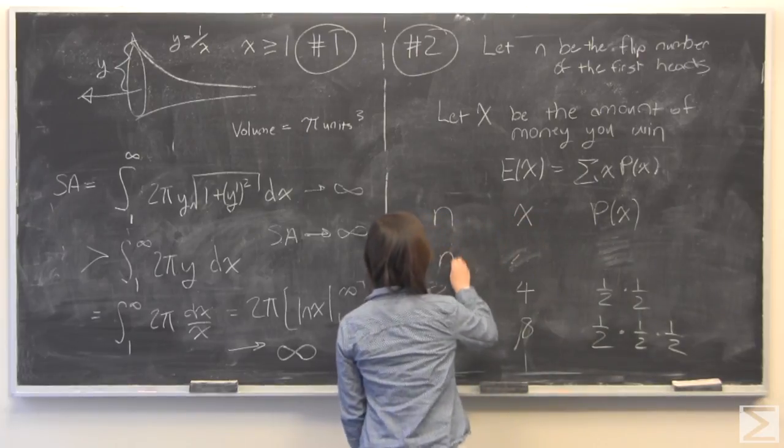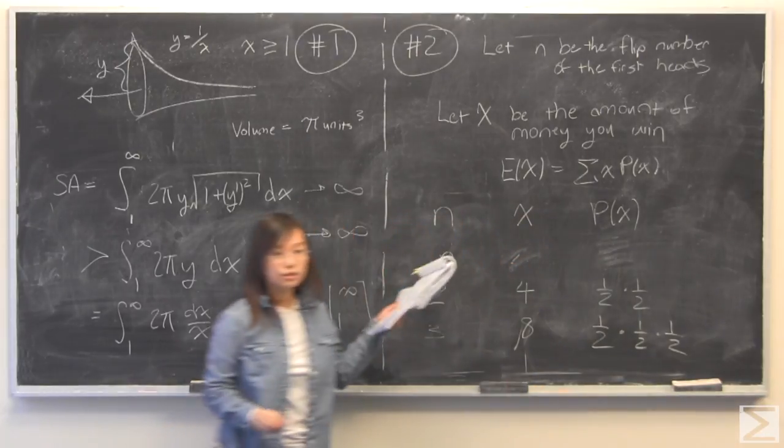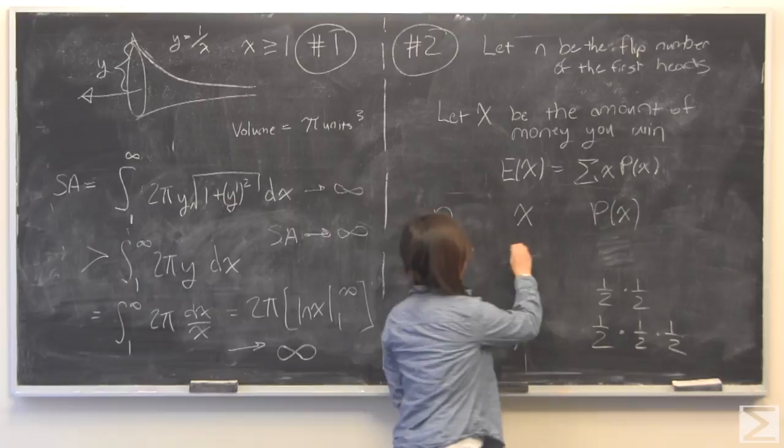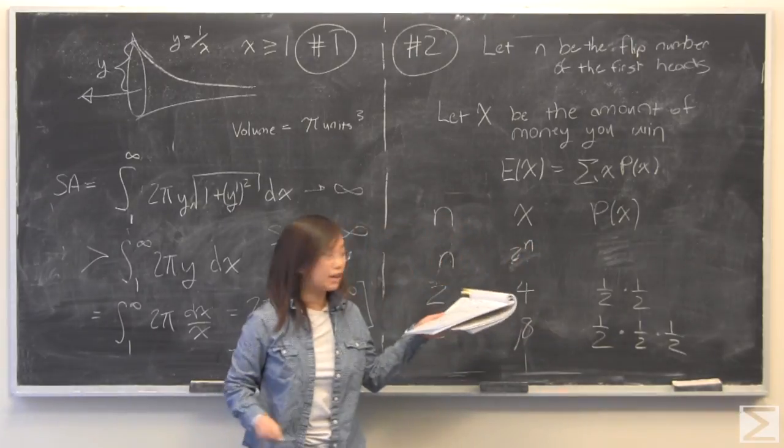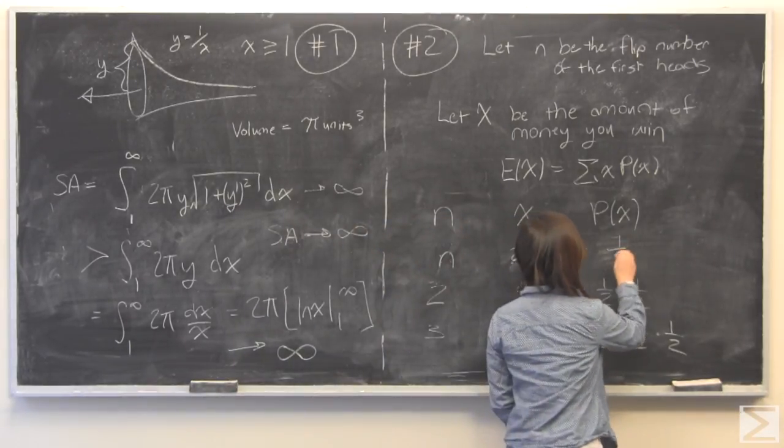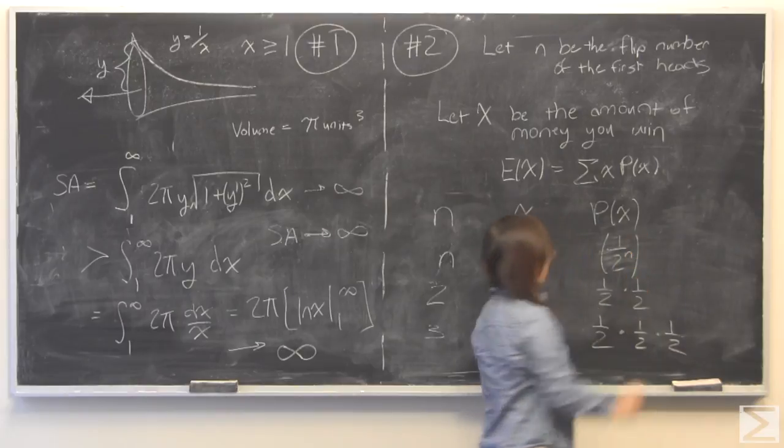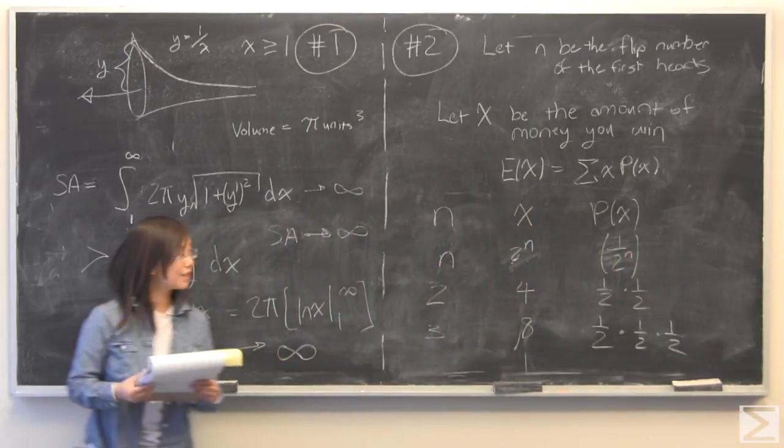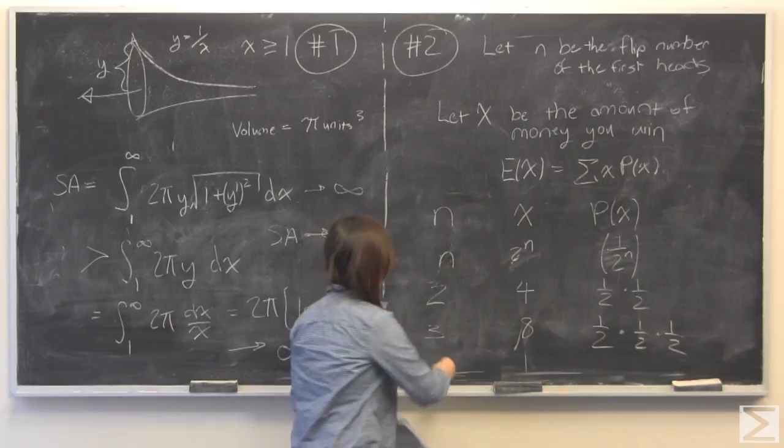So I'm just going to write, for it to take n times you will get two to the power of n dollars. And your probability of getting this is going to be one divided by two to the n. Okay, so that's basically all we need. And now we can calculate an expectation value.